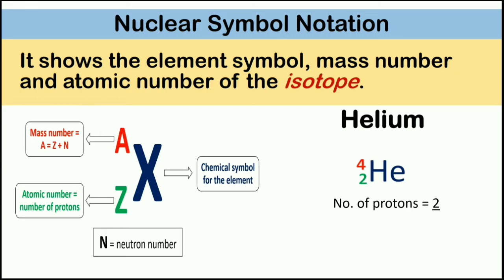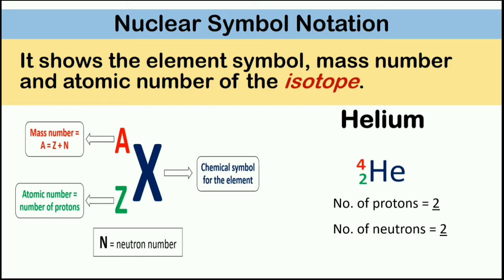What about the number of neutrons? In order to get the number of neutrons, you have to subtract the mass number by the atomic number. So 4 minus 2 is equal to 2. So the number of neutrons is 2.